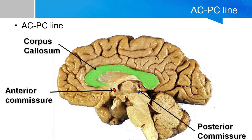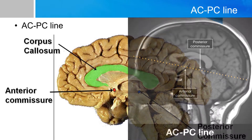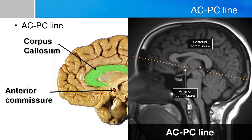I wanted to digress a little bit and talk about an important concept, which is the ACPC line. If you have a mid-sagittal scan of the brain, you can easily identify on the MRI scan the anterior commissure and the posterior commissure. If you draw a line between the two structures, what you get is the ACPC line, which has been adopted as the convenient standard for MRI scans by the neuroimaging community.